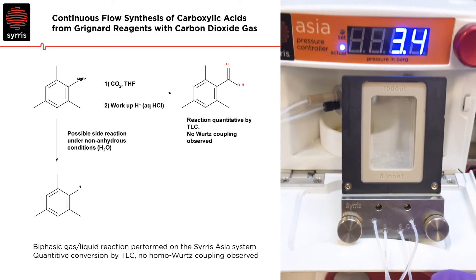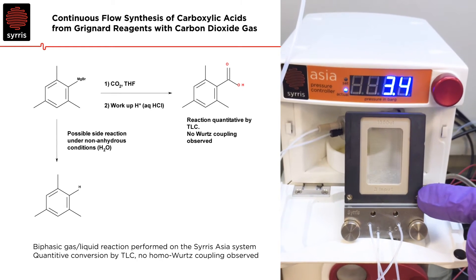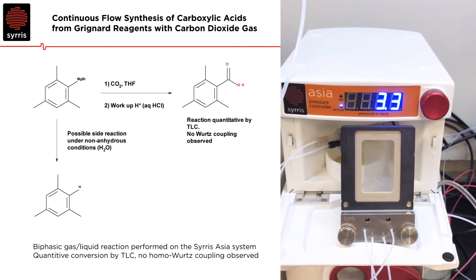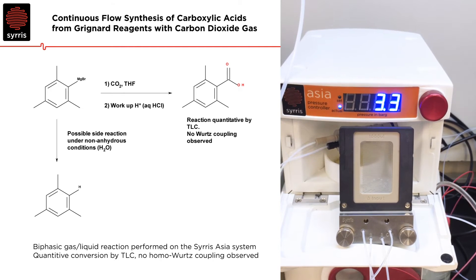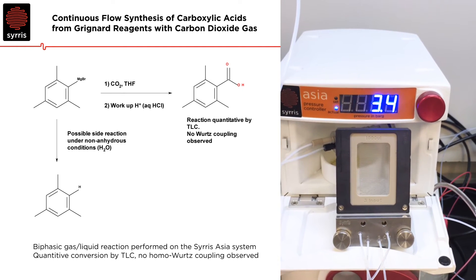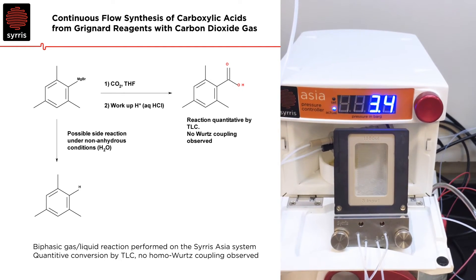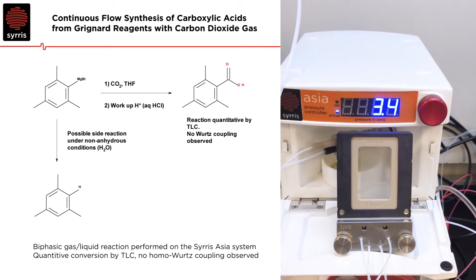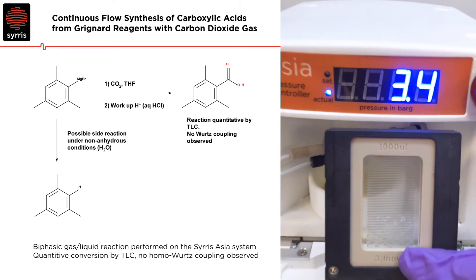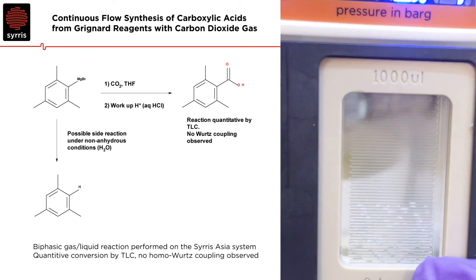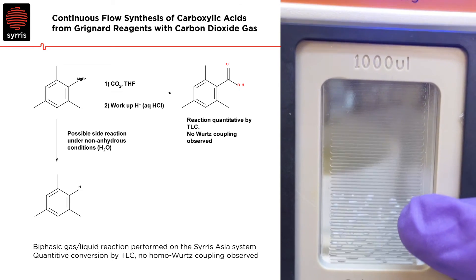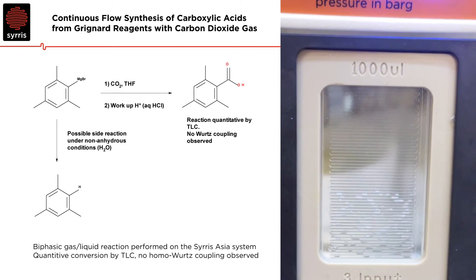Now we have a solvent line going into this reaction just to dilute our Grignard reagents to help minimise any precipitation, and you can see here we have quite nice gas-liquid partitions beginning to build up in our reactor.